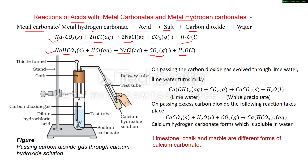Let us explain with the help of this diagram. In the test tube we first take sodium carbonate in solid form. With the help of a thistle funnel — a funnel with a long tube — we will add dilute hydrochloric acid.